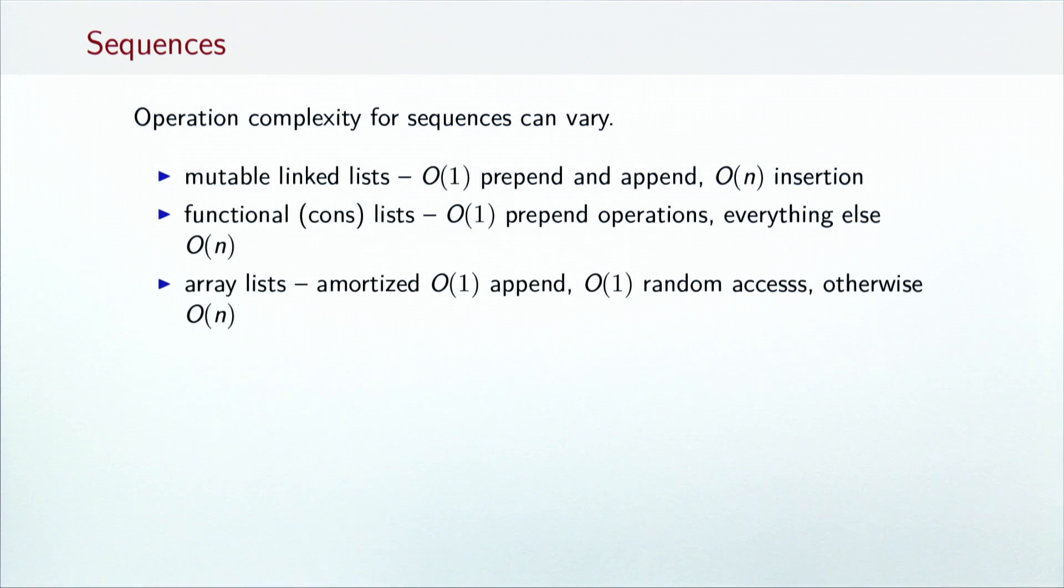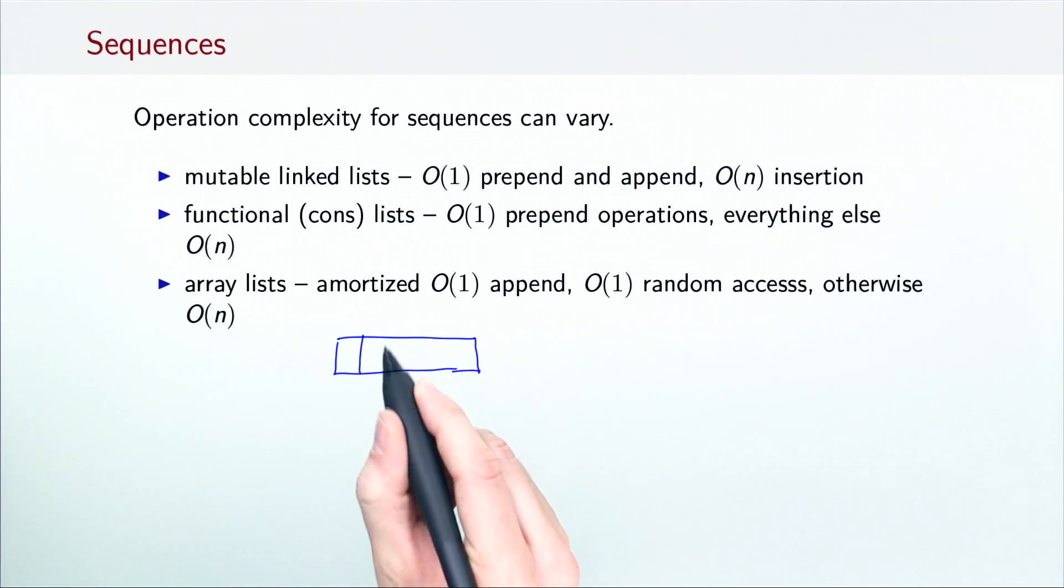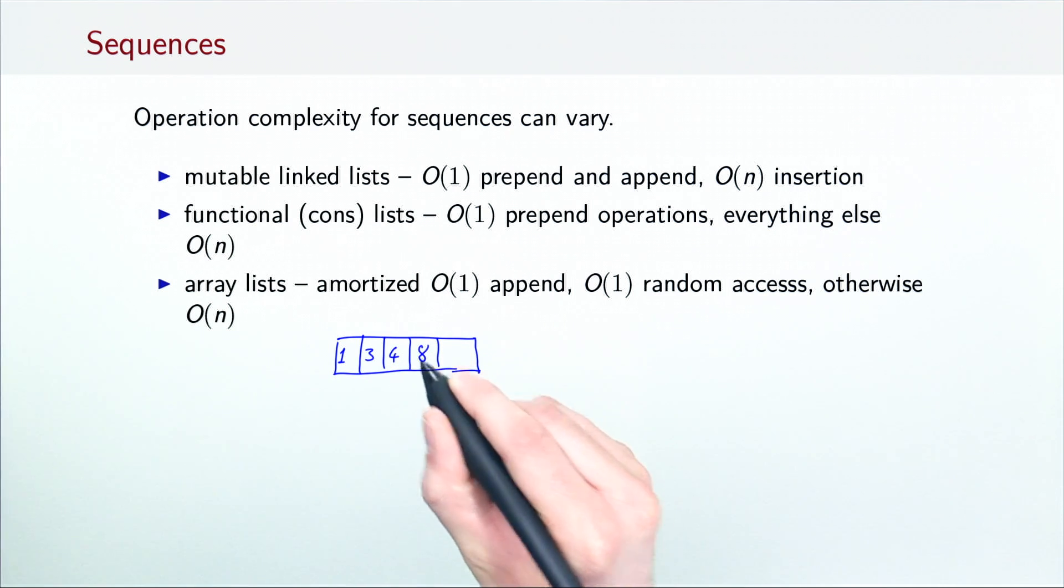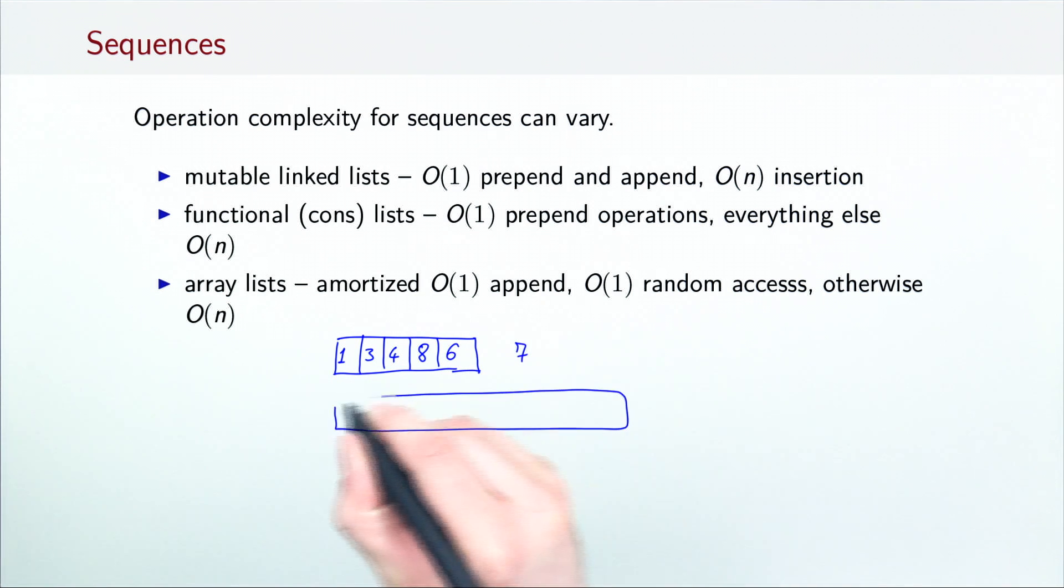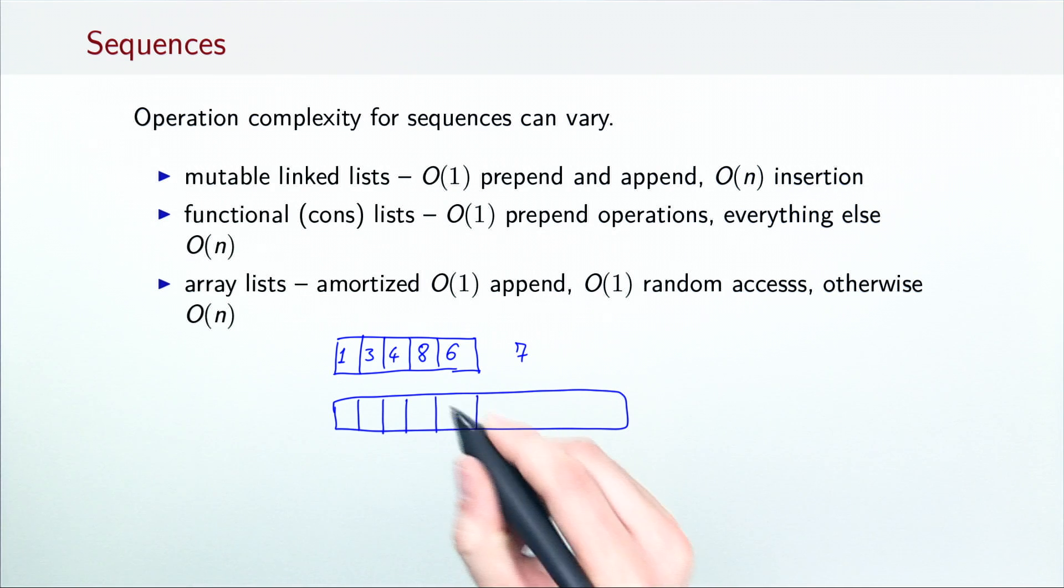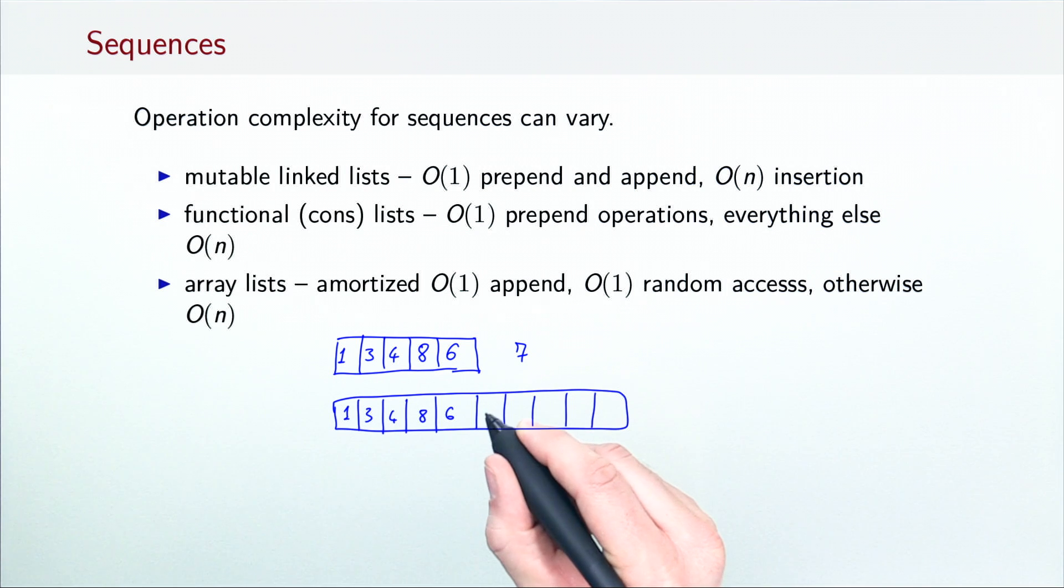Array lists used to implement array buffers in Scala have amortized O(1) append operation. Most of the time, we append an element to the array list by filling in the first empty entry in the array. So, if we want to add the elements 8 and 6, we just add them like this. When we run out of space in an array list, we simply allocate a larger array block and copy the existing elements. Once that is done, we can append the new element. On average, we do a constant amount of work when we append and only occasionally need to copy everything.